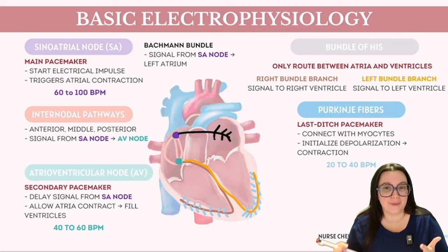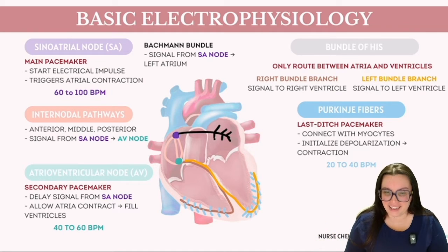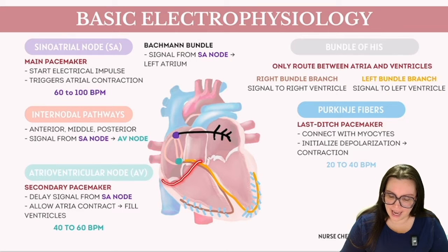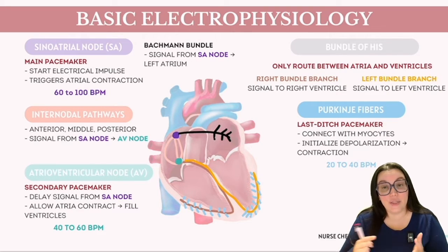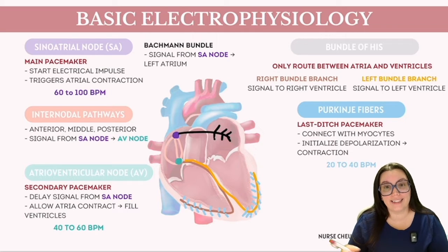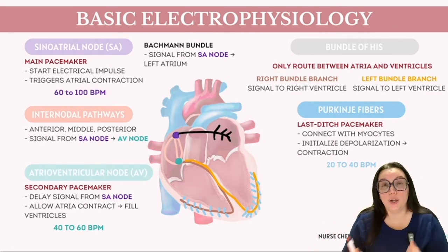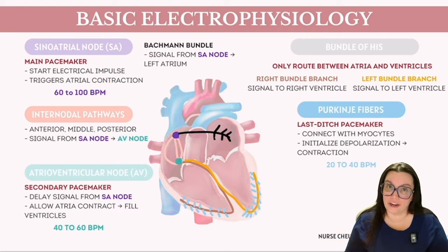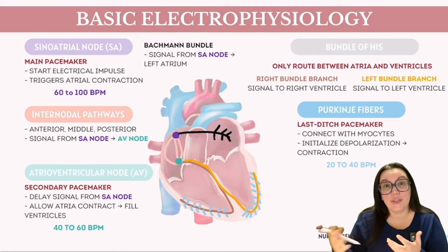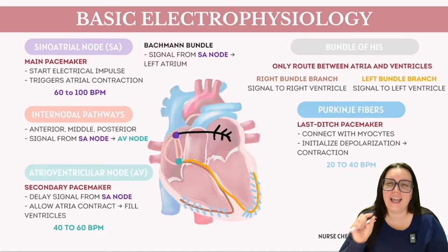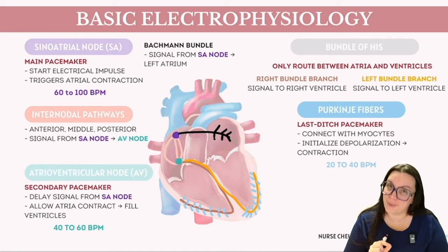It's crucial to understand the role of the fibrous tissue of the septum, which separates the left and right sides of the heart as well as the atria from the ventricles. This separation is vital as it hinders direct electrical signal transmission between these heart sections. Regarding blood supply, the SA node receives its blood from the right coronary artery in approximately 60% of individuals, with the remainder primarily receiving blood from the left coronary artery.